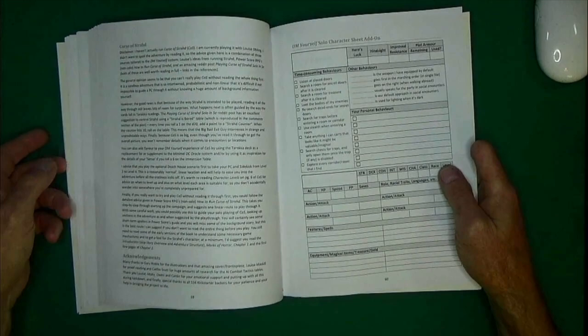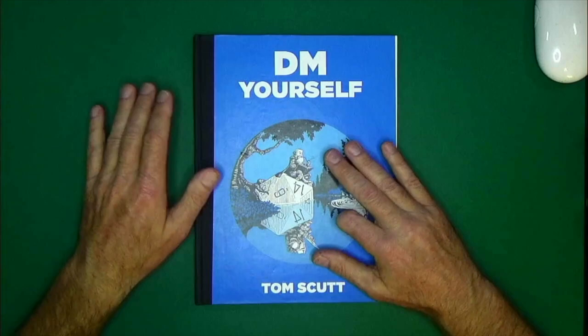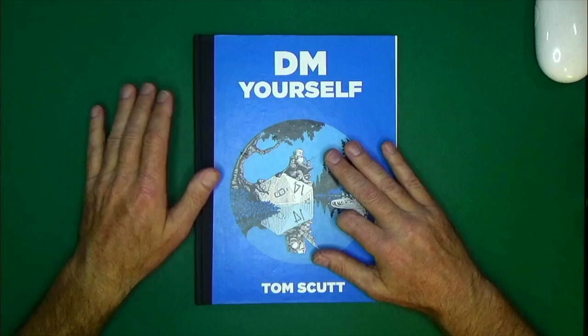And again, then we get into the character sheet. So, that is DM Yourself from Tom Scutt. He does have another book out that has more of a focus on OSR information. It has a red cover.